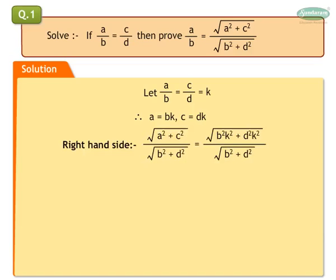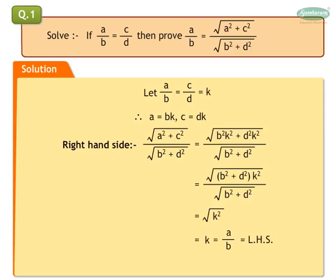Hence, square root of A square plus C square upon square root of B square plus D square is equal to square root of B square K square plus D square K square upon square root of B square plus D square. Now, K square is a common factor. We write the right hand side as square root of (B square plus D square) into K square upon (B square plus D square). B square plus D square will cancel out and we get square root of K square, which is equal to K.